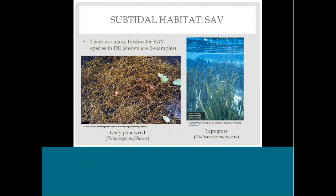SAV that could be in subtidal habitat adjacent to tidal freshwater marshes is also worth noting — in Delaware there are around 20 to 30 different freshwater SAV species, some invasive but many native. A few examples are shown for SAV adjacent to tidal freshwater areas.